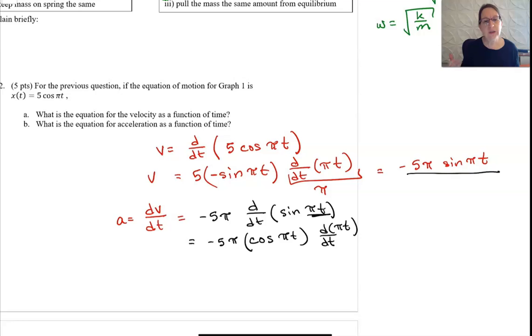Using the chain rule, you take the derivative of πt. The π comes out, derivative of t is one. So this is minus 5π squared cosine πt.